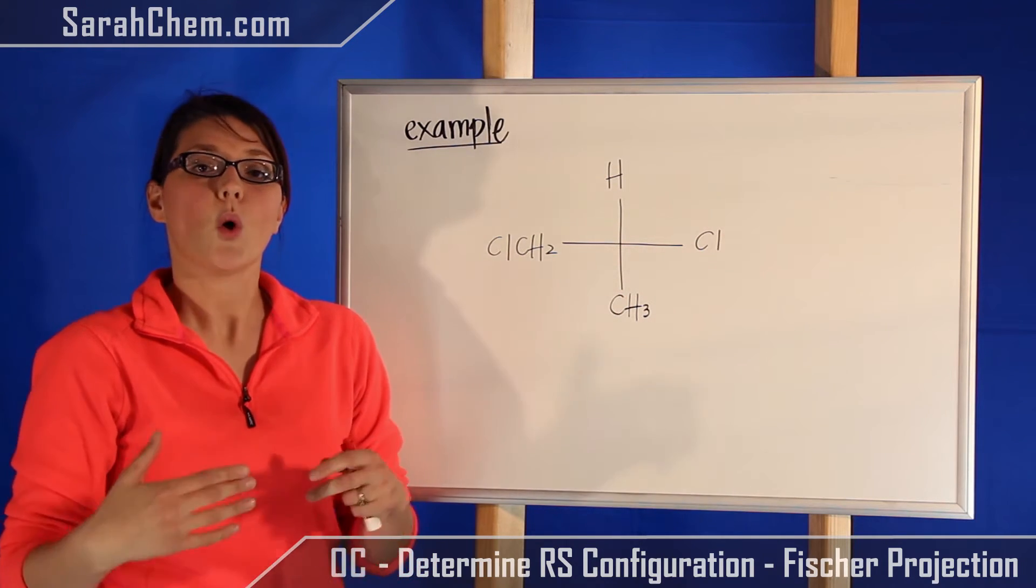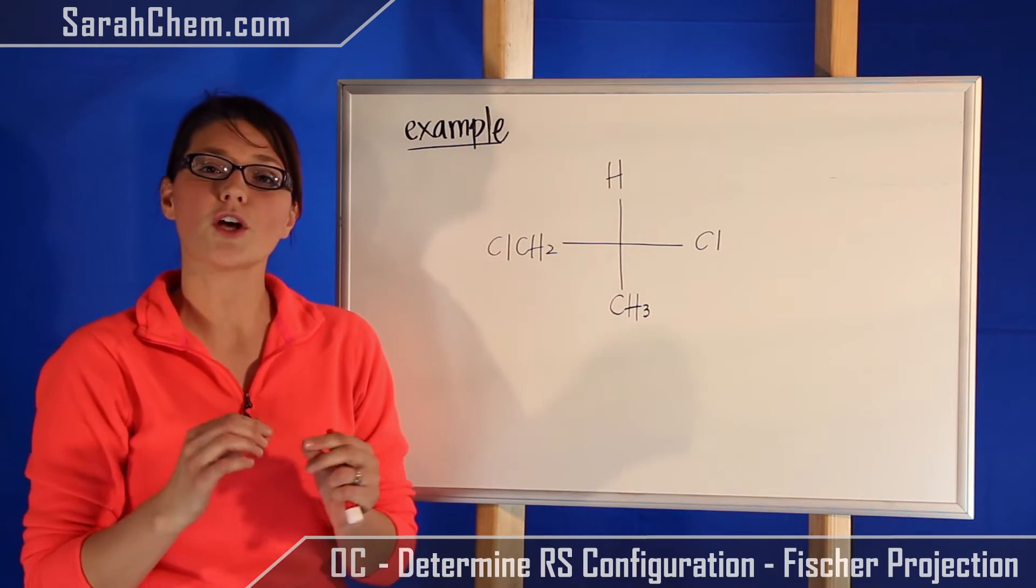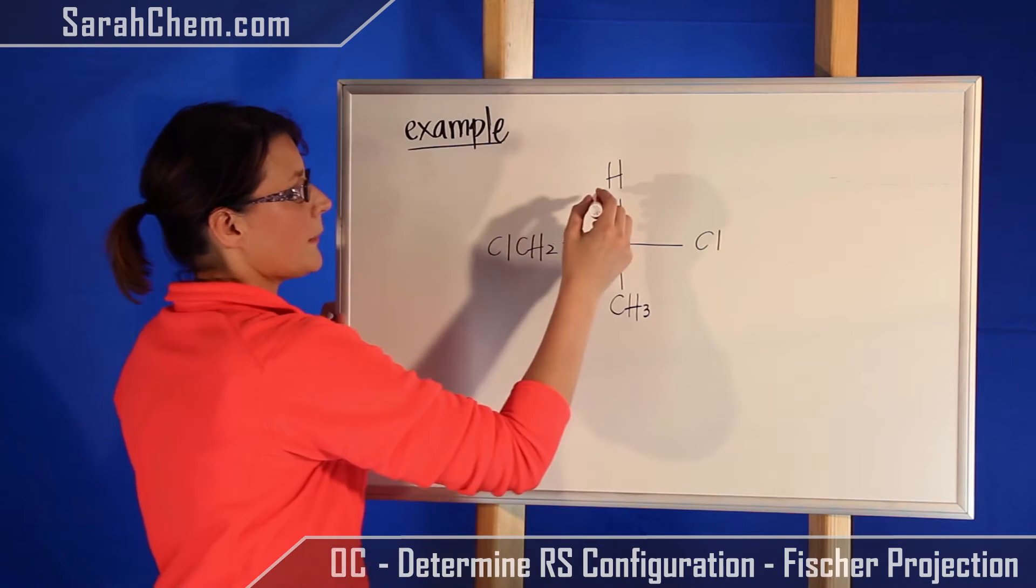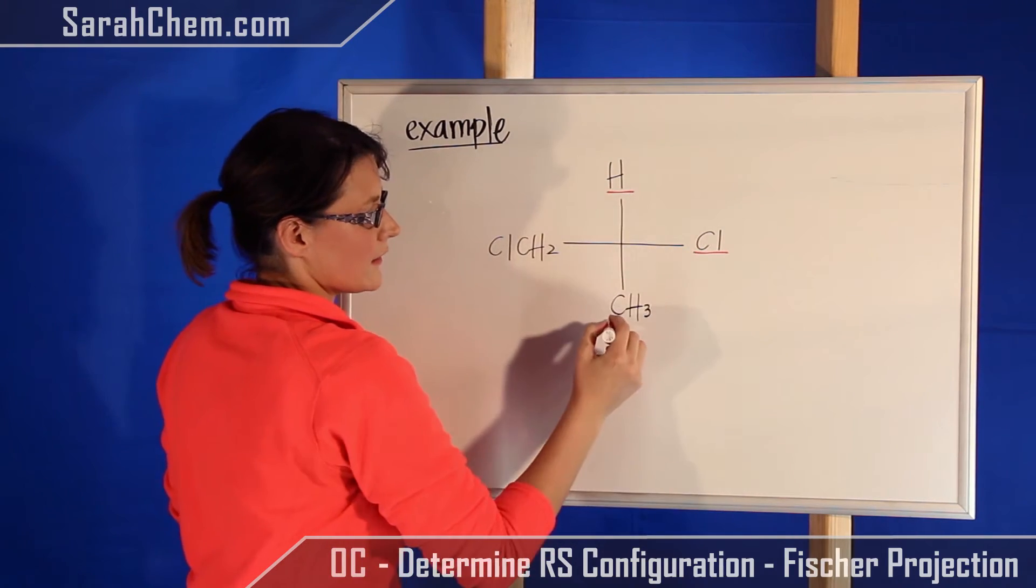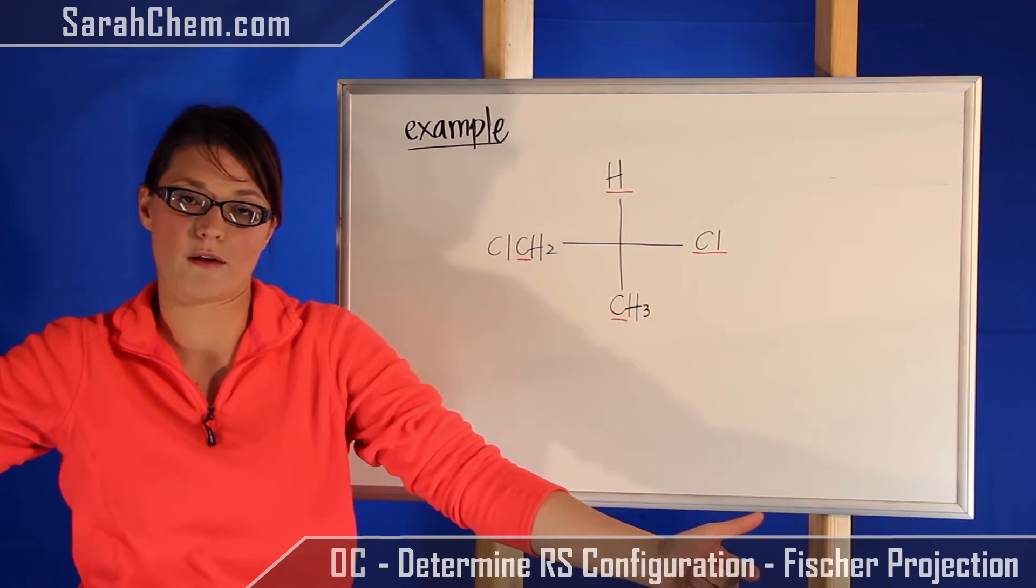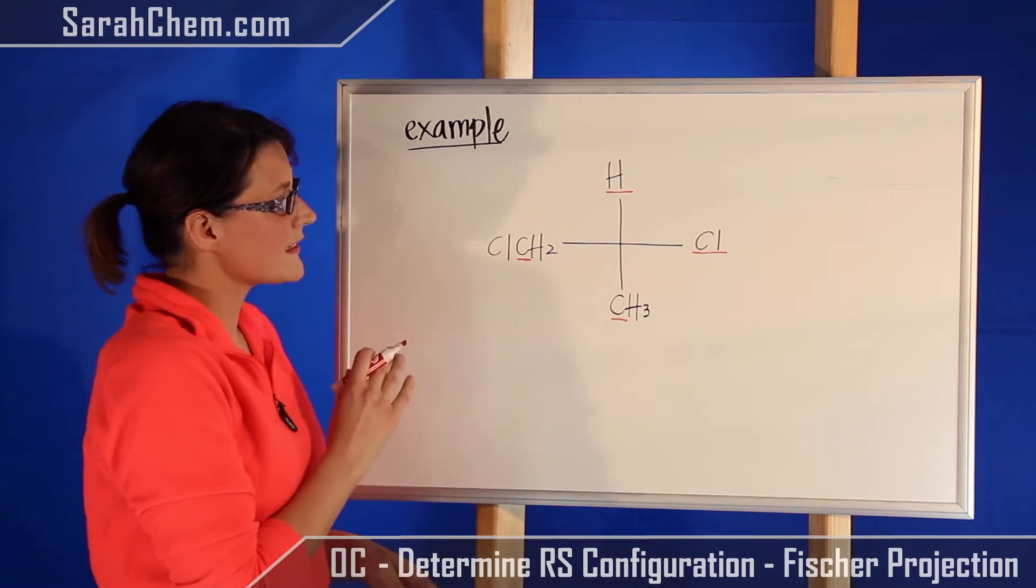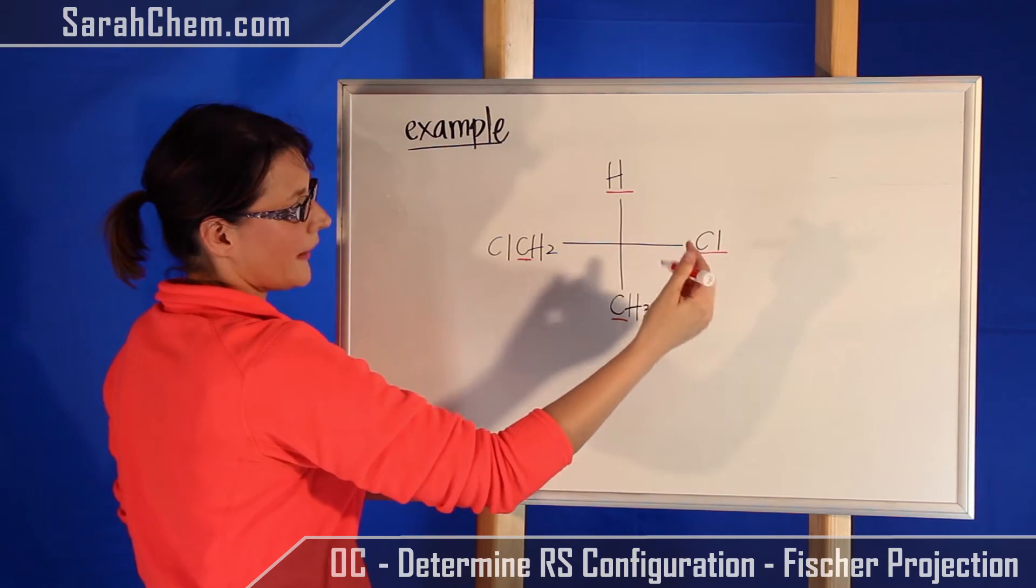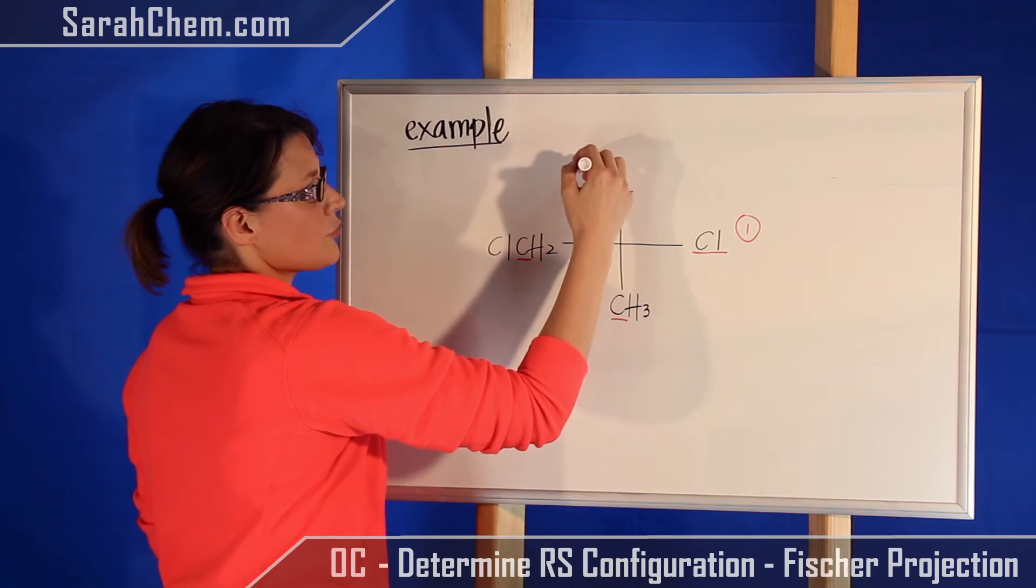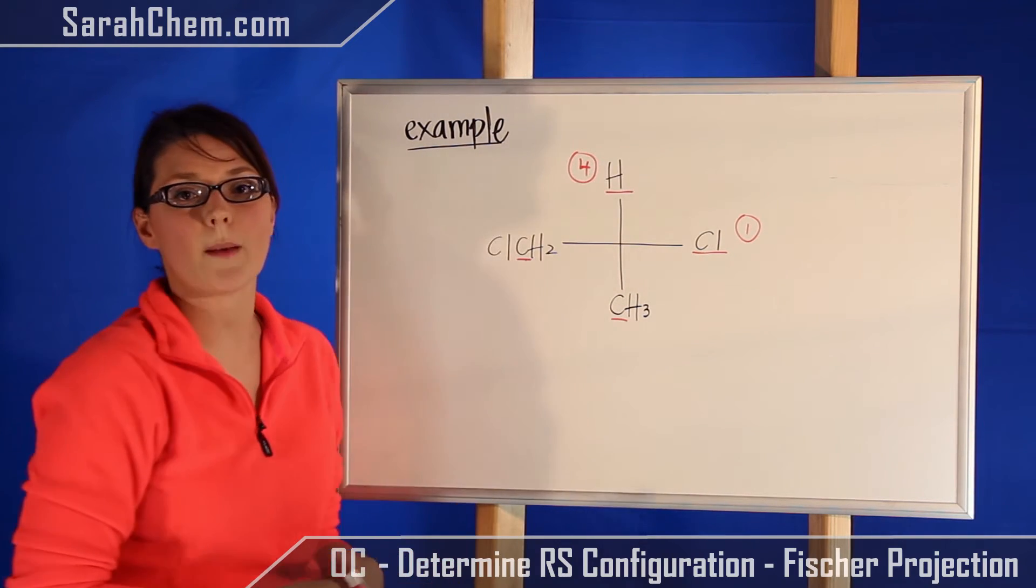So now remember, when you're going to be determining that priority, you want to look only at the atoms that are immediately attached. So meaning we're going to be comparing H to Cl to C to C. We're not looking at the full extent of the compound. So now in this case here, we know that because chlorine has the highest atomic number, it's going to have the highest priority. That'll be number one. And hydrogen will be four as it has the lowest atomic number.